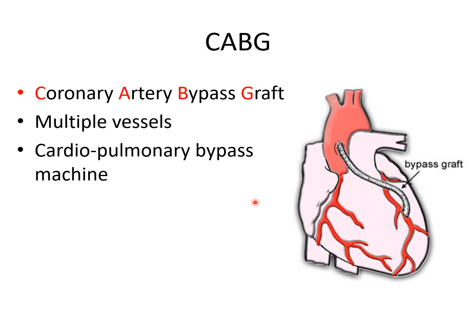Sometimes the grafting material comes from the left internal mammary artery, referred to as the LIMA in the chart. With coronary artery bypass graft surgery, the heart must be stopped, so the patient is placed on a heart-lung machine or cardiopulmonary bypass machine. All blood circulates outside the body through the machine, where it is oxygenated and returned to the body during the surgery.